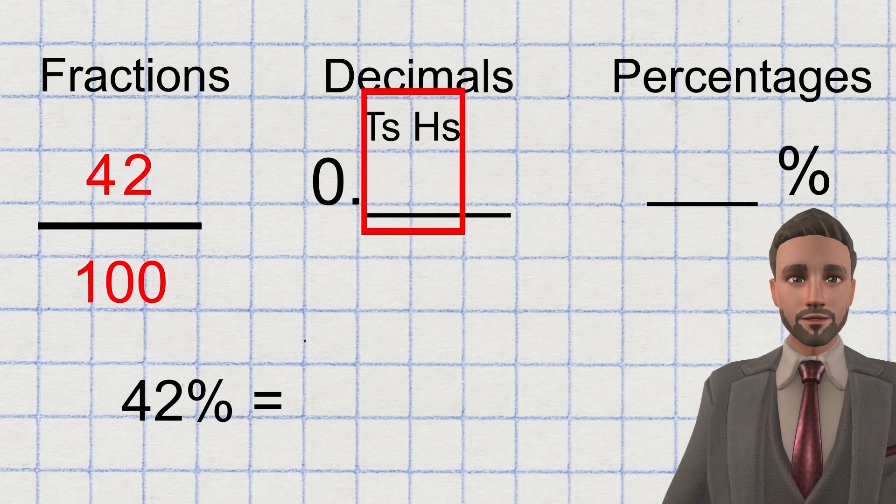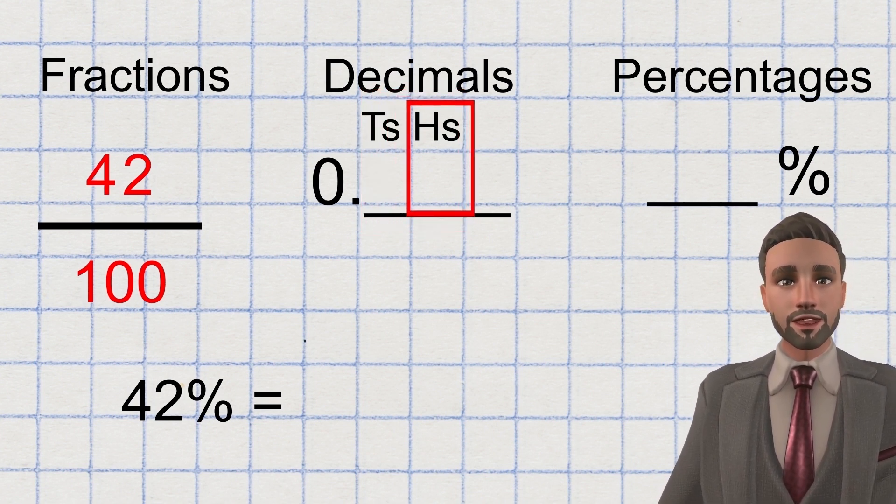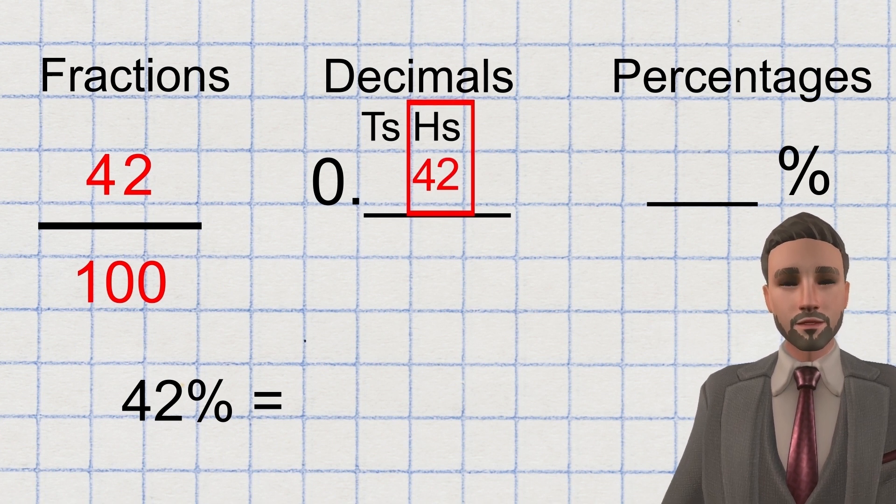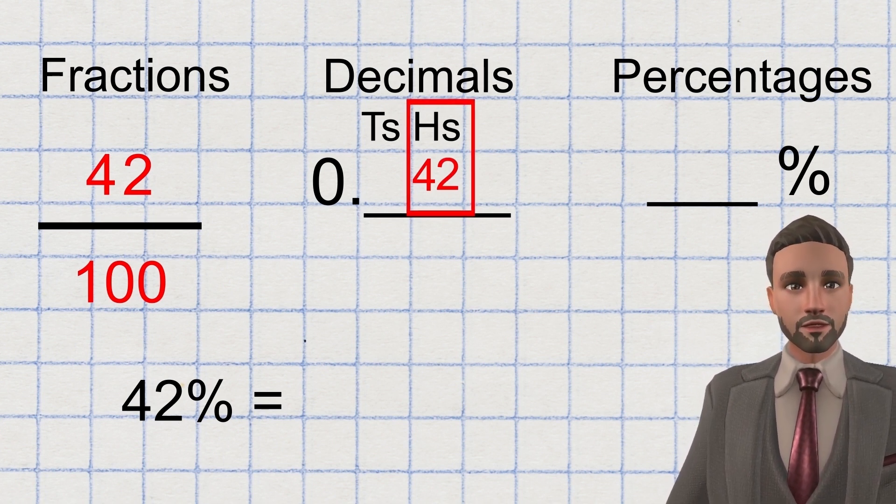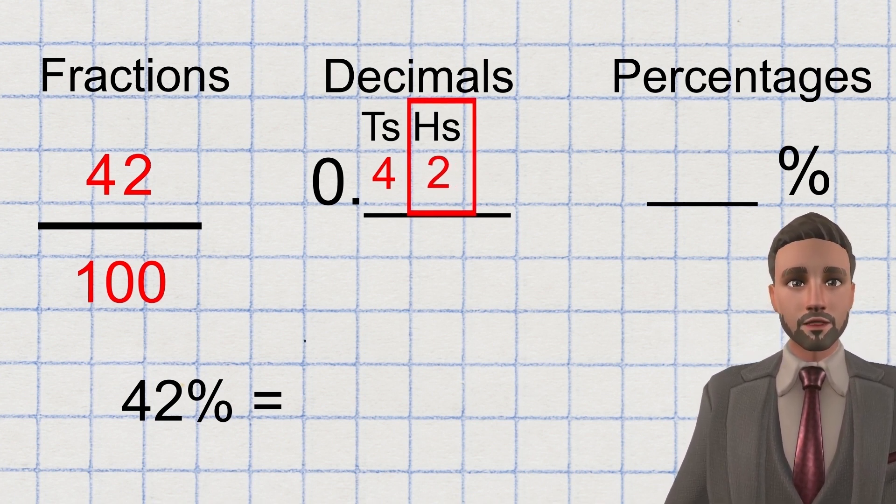As a decimal, you need to find the hundredths column. And you need to put 42 in. But you can't have two digits in one column. So the four goes in the tenths column and the two in the hundredths column, because that represents 42 hundredths.